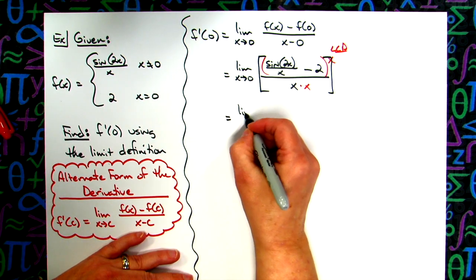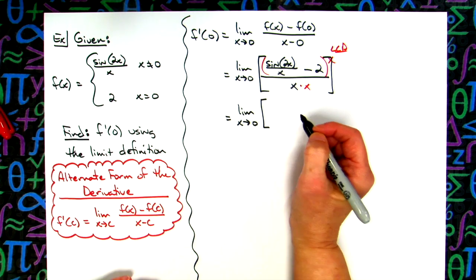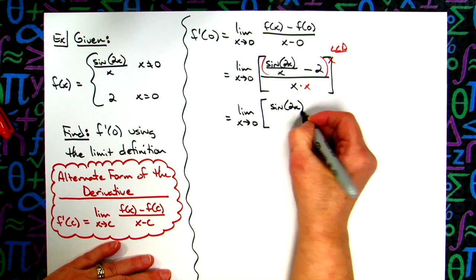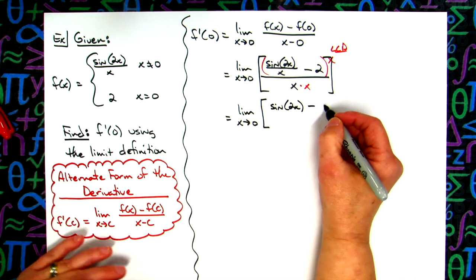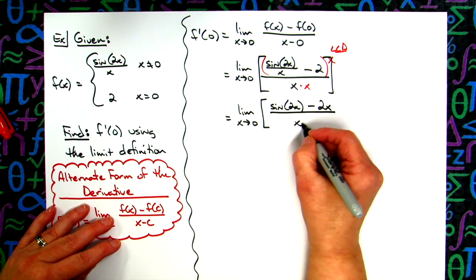So then I'm going to have the limit as x approaches 0. Go ahead and keep those square brackets in there, that's going to give me sine of 2x minus 2x, and then all over x squared.